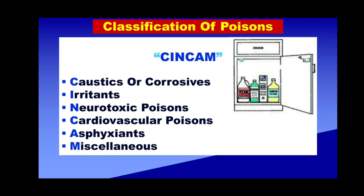Coming back to the classification: this plant is an irritant, and an irritant is one of six major groups of poisons. This is the standard classification, which I have discussed in other episodes, including the episode on general toxicology. The mnemonic to remember is SINCAN, where each letter stands for a particular group of poisons. The first C is for caustics or corrosives; I is for irritants, and that is where Abrus precatorius comes in.